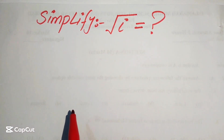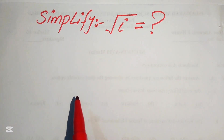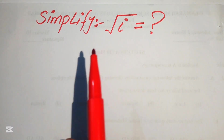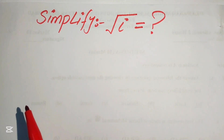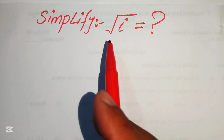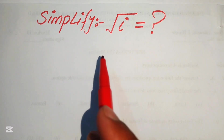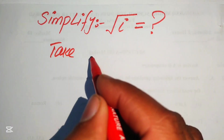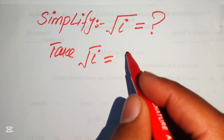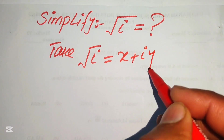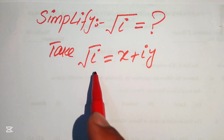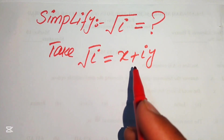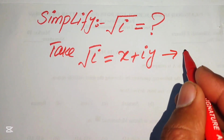Hello everyone. Let's solve this complex problem where we need to find the value of square root of iota. Since iota involves a complex number, we let the square root of iota equal x plus iota y, which denotes a complex number. We call this equation number one.